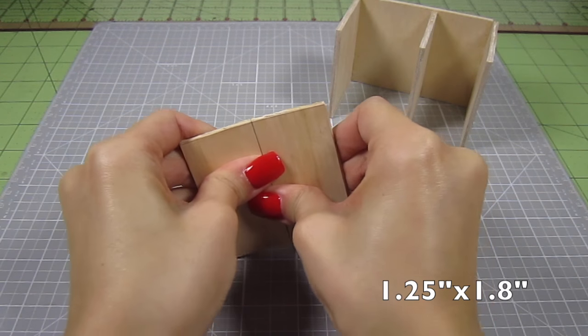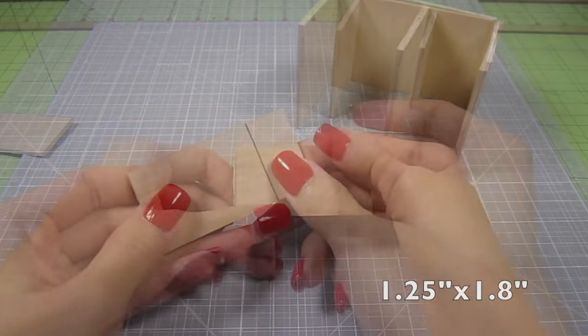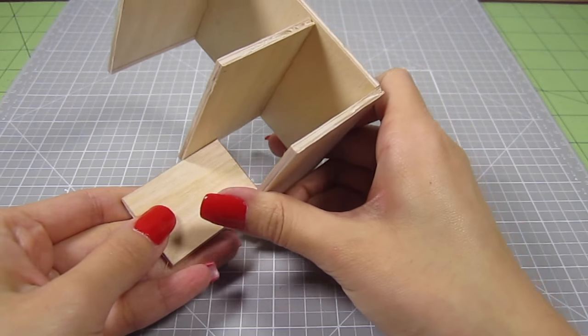Then cut out a 1 1⁄4 by 1.8 inch rectangle. This will be the bottom of the drawer area. Add glue and slide that into place.